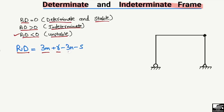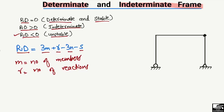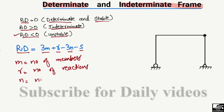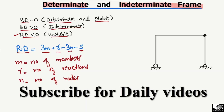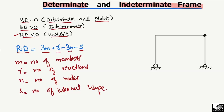The redundancy formula is: Rd = 3m + r − 3n − s. Here, m is the number of members, r is the number of support reactions, n is the number of nodes (joints) in the frame, and s is the number of internal hinges in the frame structure.